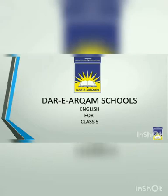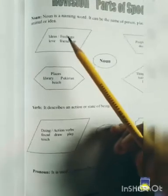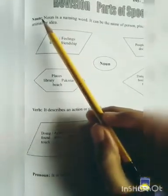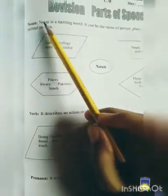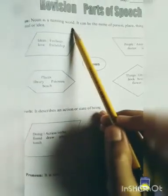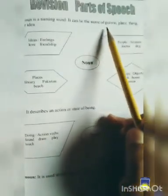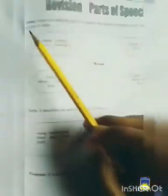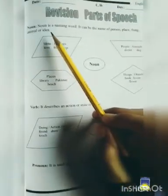This is the video for the subject of English for class 5. Now let's begin from the first definition that is given. Noun. Noun is a naming word. It can be the name of a person, place, thing, animal or idea.